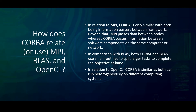In relation to MPI, CORBA is only similar with both being information passers between frameworks. Beyond that, MPI passes data between nodes, whereas CORBA passes information between software components on the same computer or network. In comparison with BLAS, both CORBA and BLAS use small routines to split larger tasks to complete the objective on hand. And in relation to OpenCL, CORBA is similar as both can run heterogeneously on different computing systems.